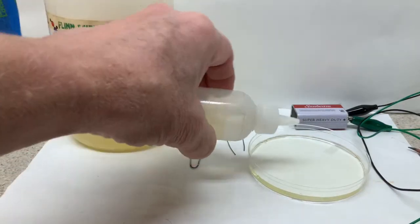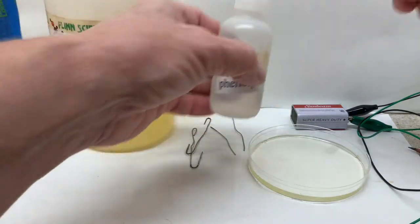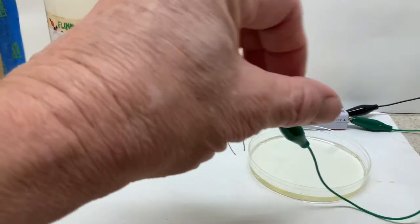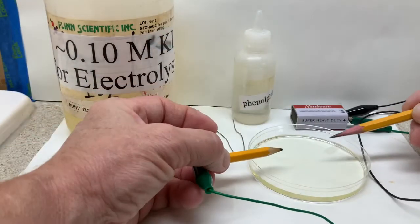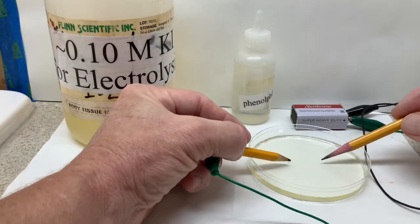Phenolphthalein, which you know is an acid-base indicator, is added. And the electrodes are placed into the solution. Now it's time to make some careful observations.